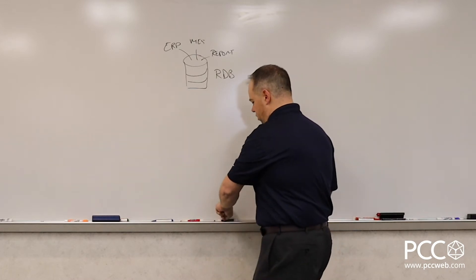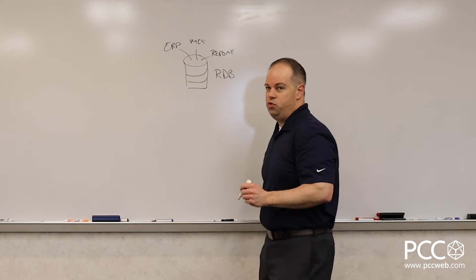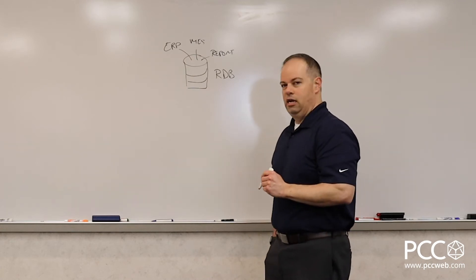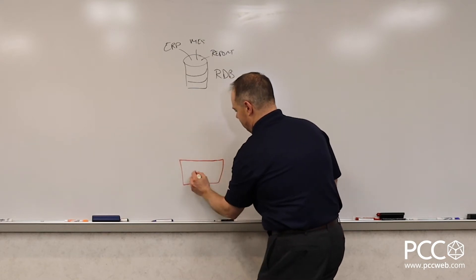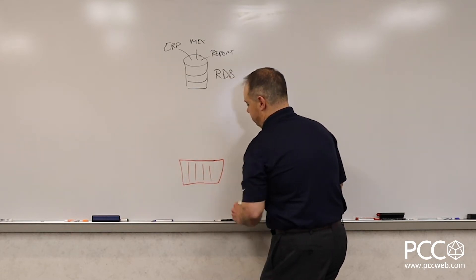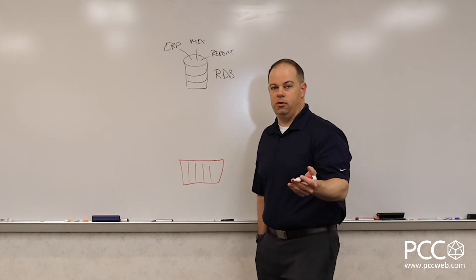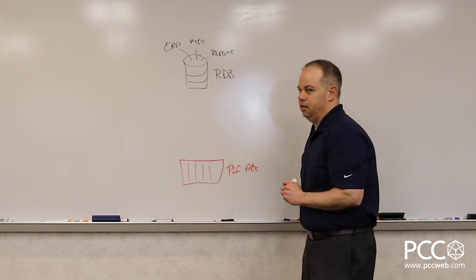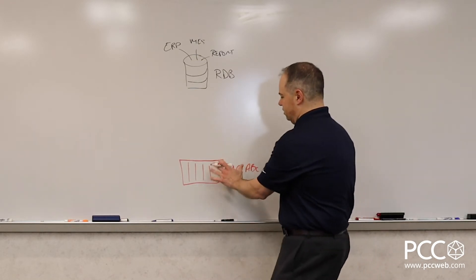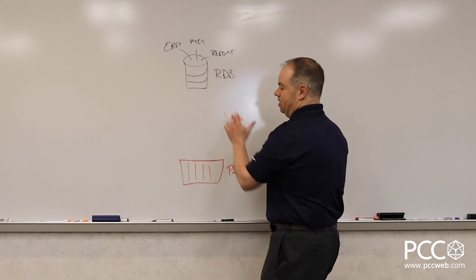When we think about how that data gets to that database for all those tools, that data is obviously going to start out on the production floor, likely in some type of device like a programmable controller. So down here we have, we'll call it PLC A, B, C. So we've got our PLC down here, we need to get data to our database.